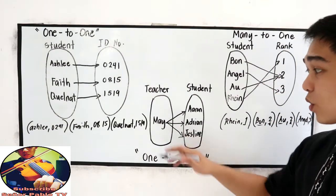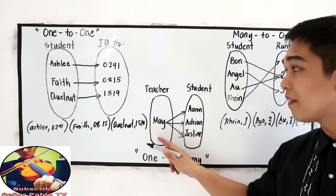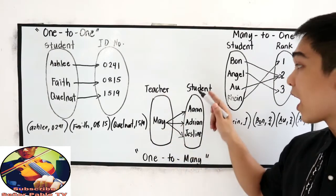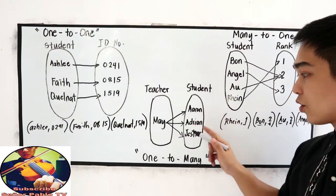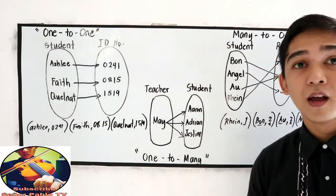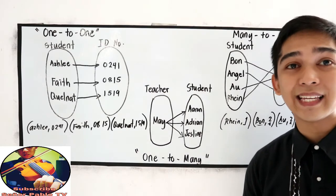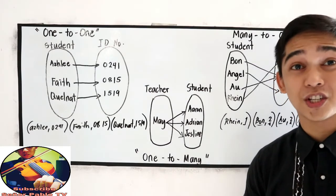So, why one-to-many? Because you only have one domain, which is the teacher, Teacher May, and a lot of students, Aaron, Adrian, and Jess Leanne. Now, the question is, which of the following is a function, and which is not?